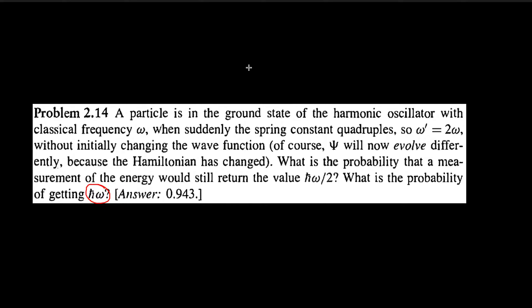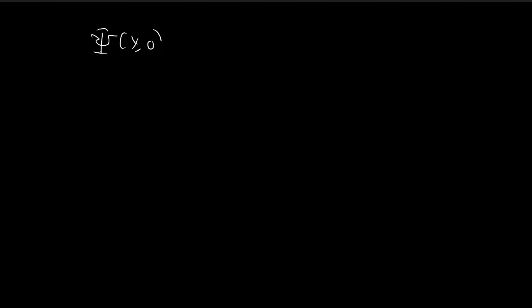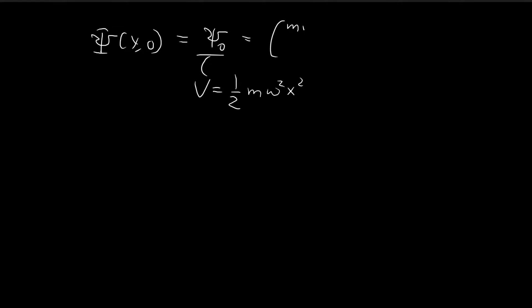We're told that the particle is initially at the ground state of the harmonic oscillator, so the initial wave function is equal to ξ₀. This ξ₀ corresponds to the case where the potential is equal to ½mω²x², and from the earlier derivations in the book, we know that ξ₀ is equal to a specific expression.